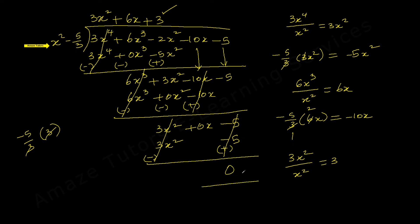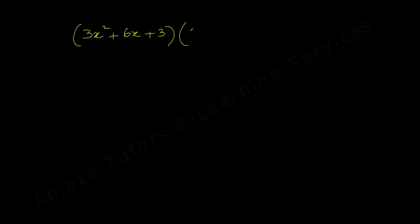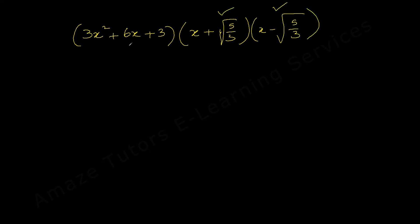A remainder of 0 confirms that x² - 5/3 is indeed a quadratic factor of the given polynomial. The quotient is 3x² + 6x + 3. We already know two roots are +√(5/3) and -√(5/3). To get the other two roots, we need to factorize 3x² + 6x + 3, which is straightforward.